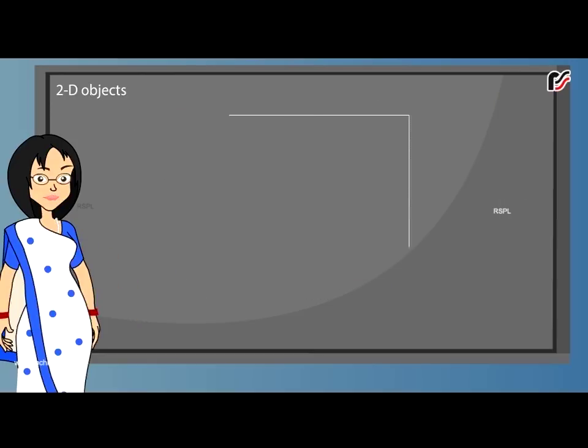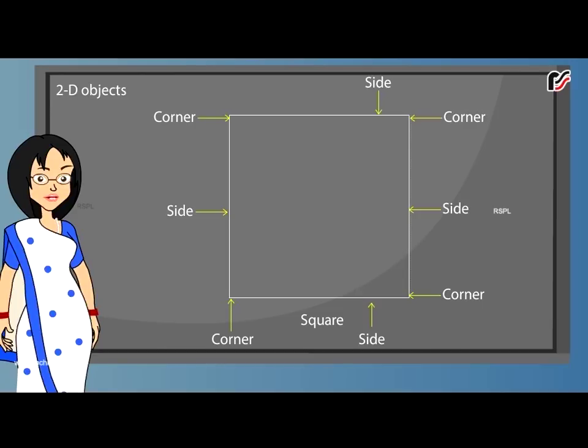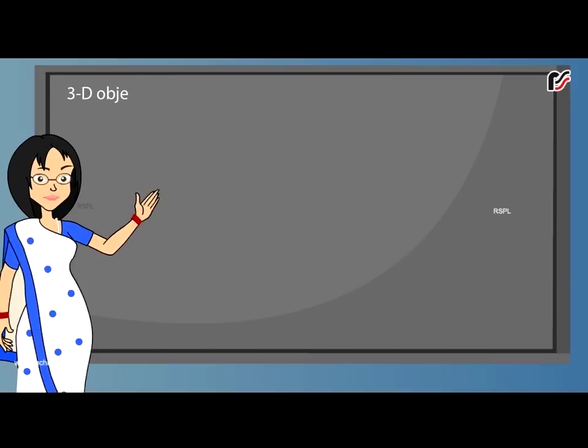This is a square. It has four sides and four corners. All of its sides are equal in length. Now for 3D objects.